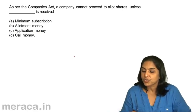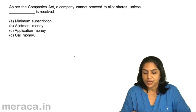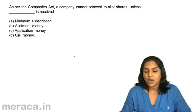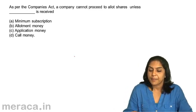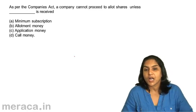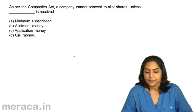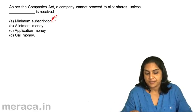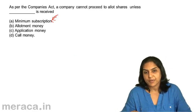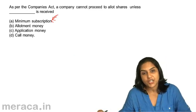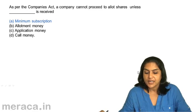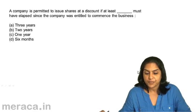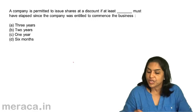A company cannot proceed to allot shares unless what is received? A) Minimum Subscription, B) Allotment Money, C) Application Money, D) Call Money. The company cannot proceed to allot shares unless a minimum subscription is received. Minimum subscription according to SEBI is 90% of the issue, so the correct answer is A, minimum subscription.